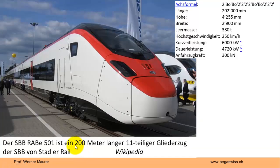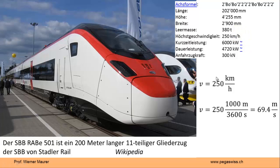Der Shinkansen von Staller-Reil ist 200 Meter lang und kann bis 250 km pro Stunde fahren. Jetzt rechnen wir diese Spitzengeschwindigkeit in SI-Einheiten um: 1 km ist 1000 Meter, 1 Stunde ist 3600 Sekunden. Wir werten das aus und bekommen fast 70 Meter pro Sekunde. Also nach knapp 3 Sekunden ist der Zug in voller Fahrt schon vorbei.